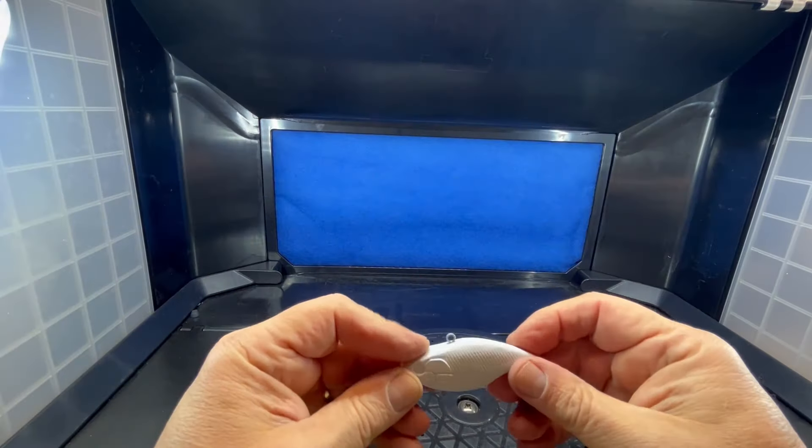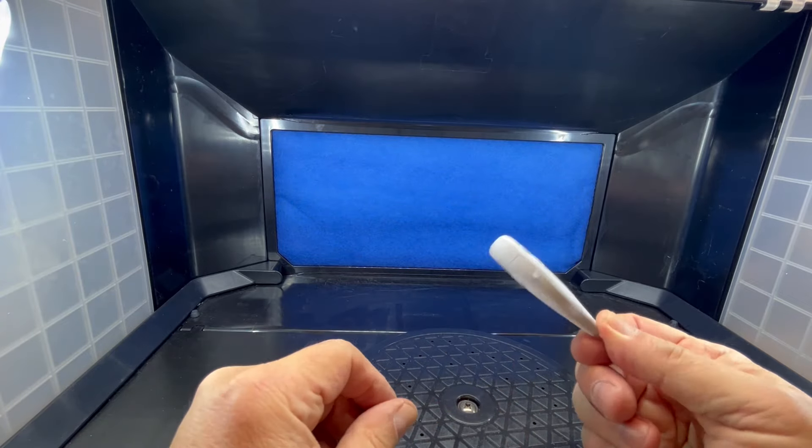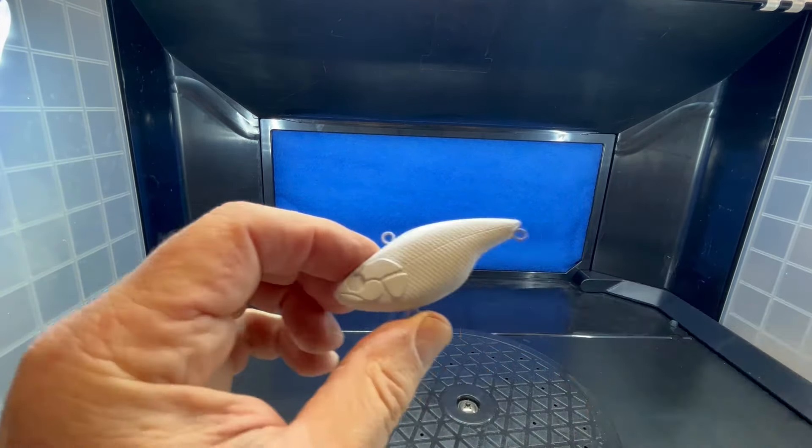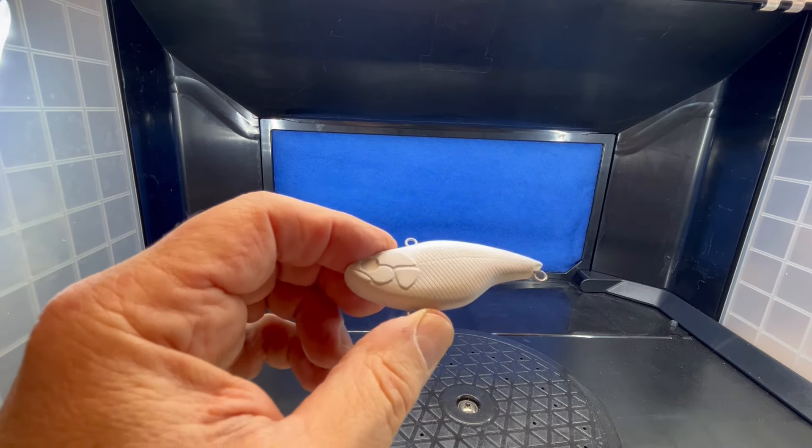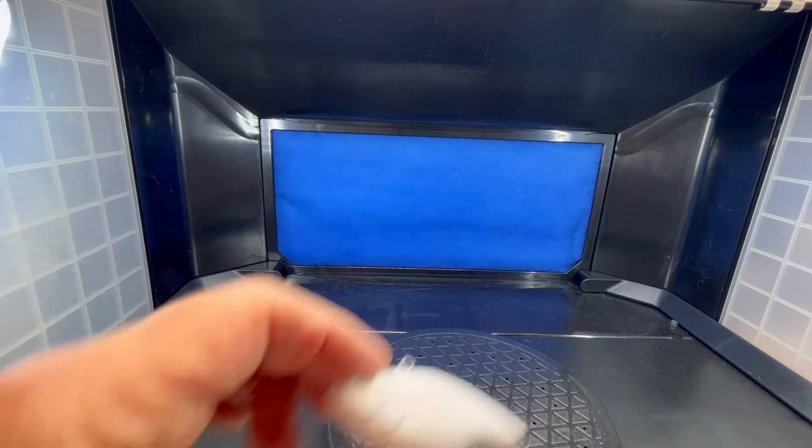All right, so today what I'm doing is I'm just going to paint a bunch of lure blanks white. I started off with this rattle trap, you know, I'm just trying to figure out trigger control and all that. So I started off with that one, came out pretty good.